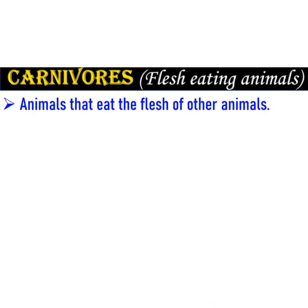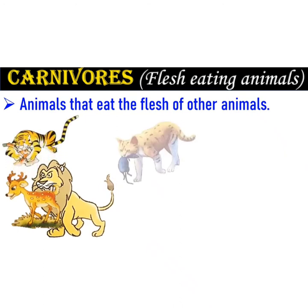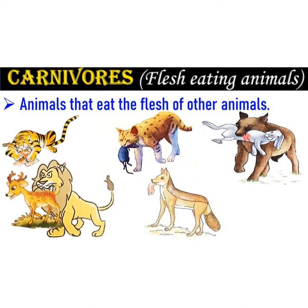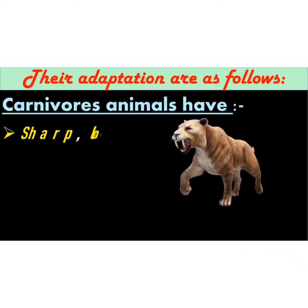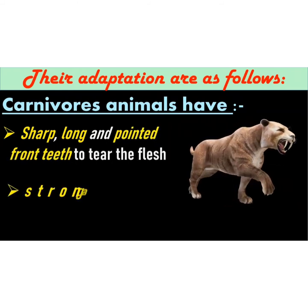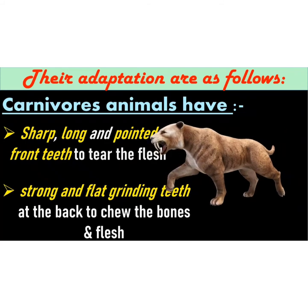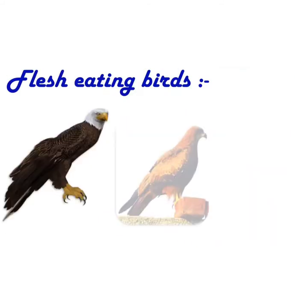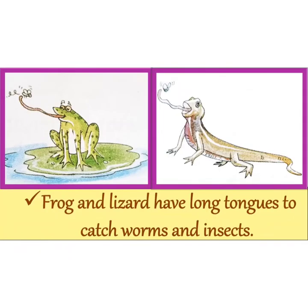Next is carnivorous: animals that eat the flesh of other animals are called carnivorous. Lions, tigers, cats, wolves, and jackals are some examples. Carnivorous animals have sharp, long, and pointed front teeth to tear flesh, and strong flat grinding teeth at the back to chew bones and flesh. Birds such as eagles, kites, and vultures also eat flesh — they use their sharp claws to catch and hold their prey, and have strong, sharp, hooked beaks to tear flesh. Frogs and lizards have long tongues to catch worms and insects.